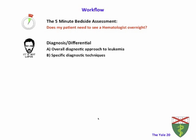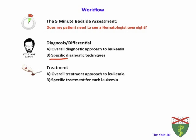The bedside assessment section is followed by diagnosis and differential. The goal of this section is to give you an overall diagnostic approach to leukemia — how to approach leukemia in a general sense. Certain diagnostic techniques are common to all different subtypes and we will illustrate them, along with some specific techniques like flow cytometry and gene sequencing. Diagnosis and differential is followed by the treatment section, where we talk about the overall treatment approach to leukemia, covering what is common across subtypes as well as specific treatments for each different kind.